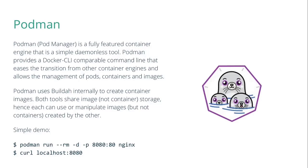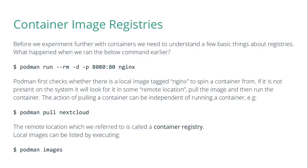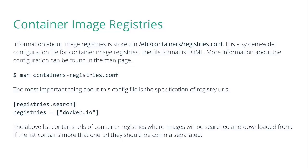Podman is a container engine that boasts being daemonless and extremely lightweight. Podman can manage pods, containers, and images. Container images are stored in image registries. When Podman is run and an image name is specified, the process first looks at the local image registry, and if the image is not found locally, it will query a remote container image registry. Information about container registries is stored in the /etc/containers/registries.conf configuration file, where remote registries can be added or blocked.